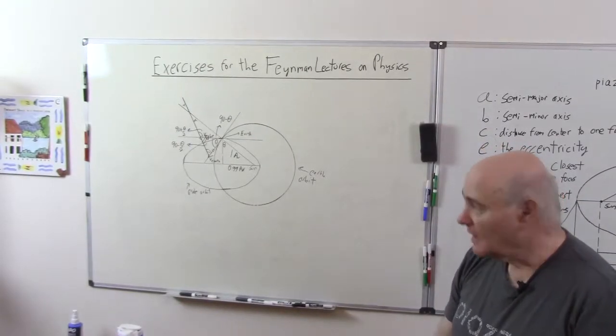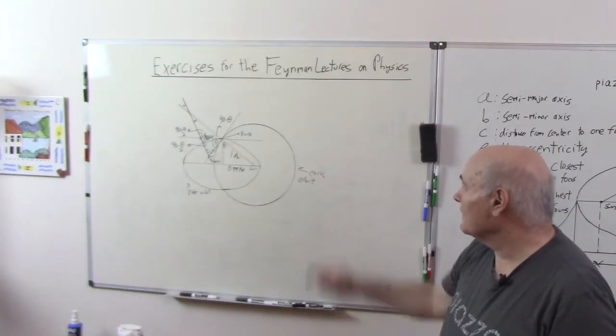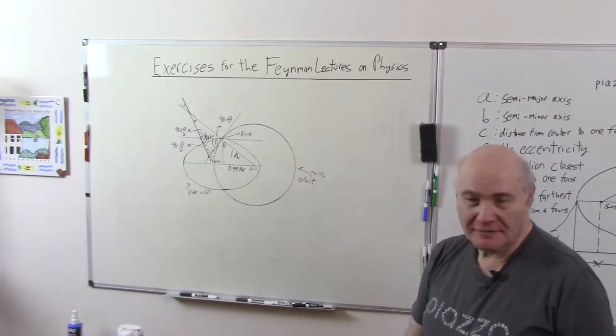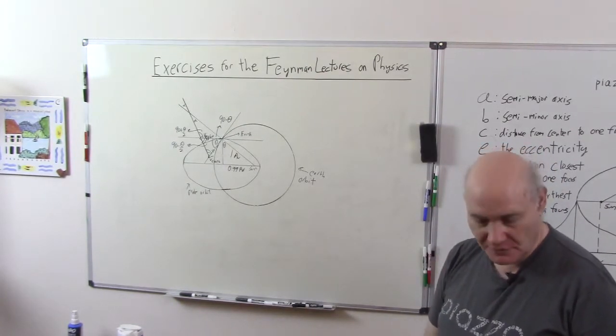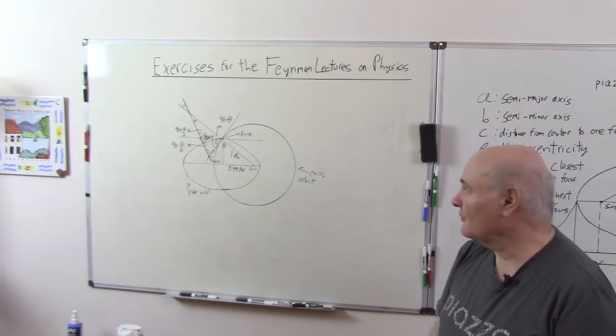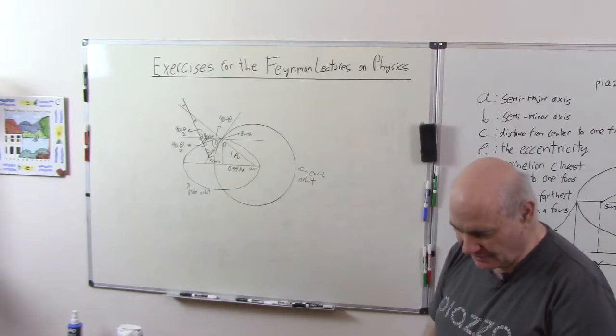Hi, this is Mark Weitzman. I want to do my final problem from the exercises on final lectures on physics on gravitation and ellipses and orbits. This is problem 1032 and it's the last one in this section so it's probably one of the harder ones.